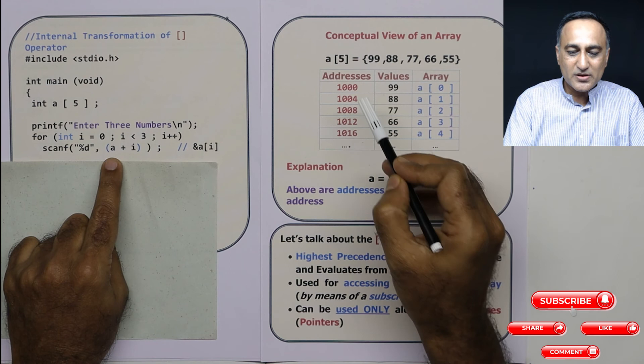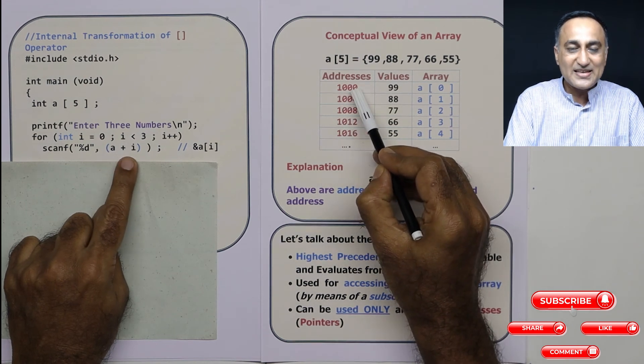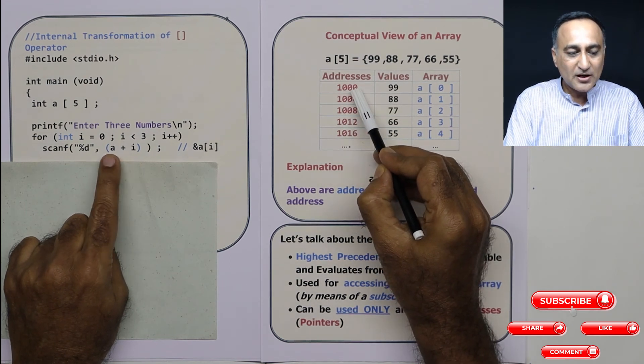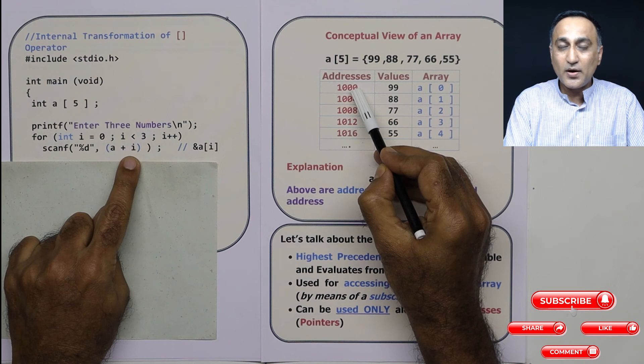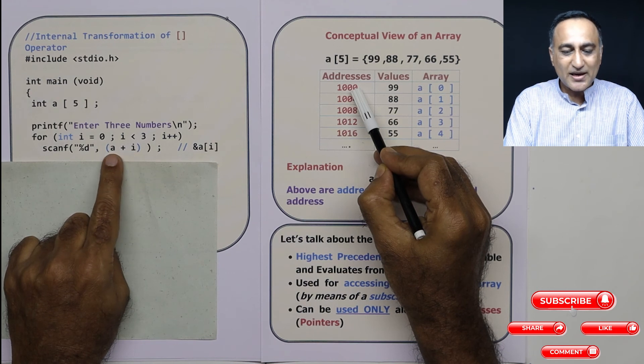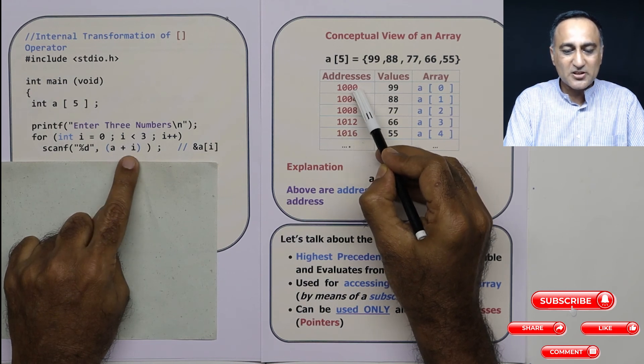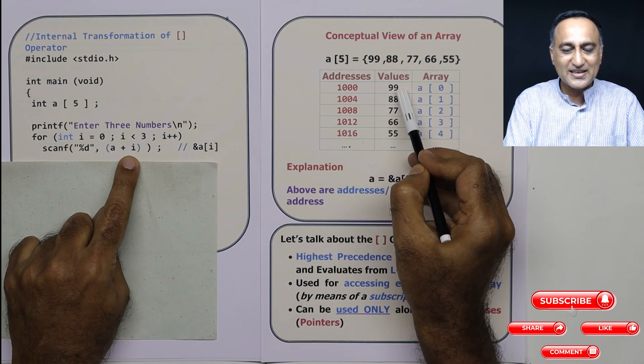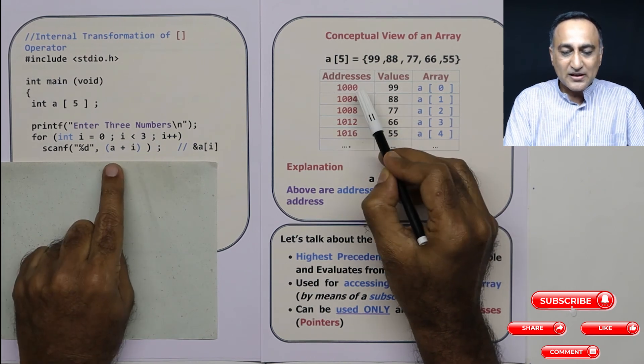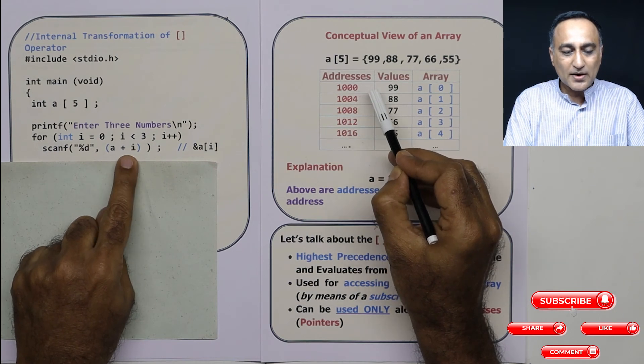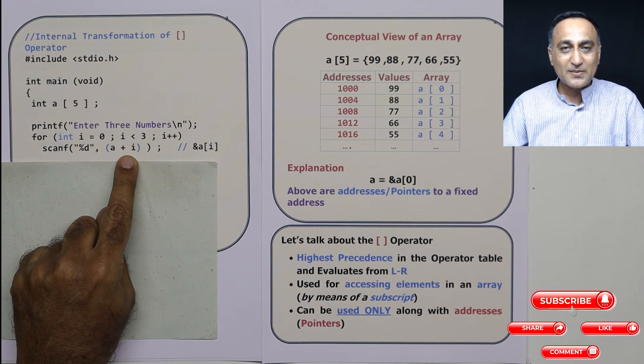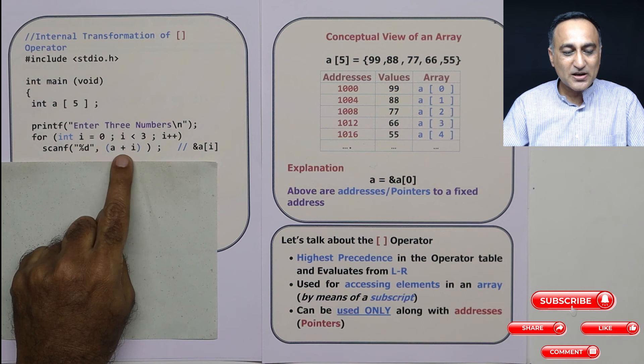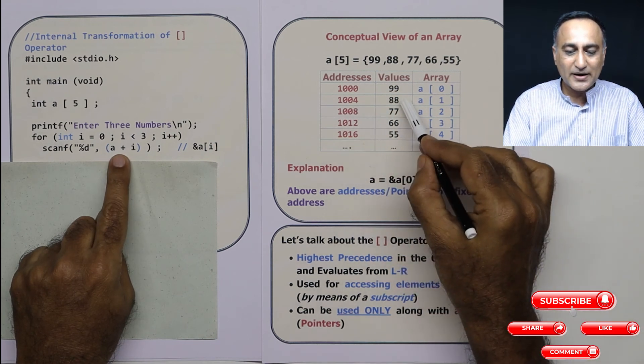It's very simple to understand A plus I. What is A? A I told you is the address of the 0th location 1000. I is the index 0. Now this is not a normal addition. This is a pointer arithmetic. If you are not familiar with pointer arithmetic, go and take back a look at the pointer arithmetic videos at the end of your pointer sessions. So A is 1000, I is 0. 1000 plus 0 is address 1000. Address 1000, 99 is read. Then I is increased to 1. Now this is still fixed. 1000 plus 1. 1 into size of integer type of data. 1 into size of integer type of data is 4. So it is this becomes 1004. So address 1004, 88.